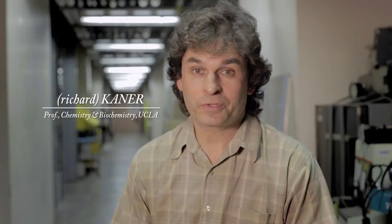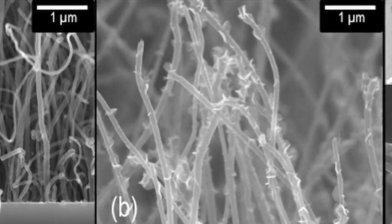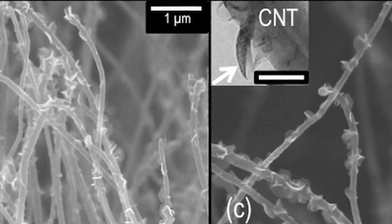Graphene is a single layer carbon. It's one of the strongest materials ever known and it's completely flexible. The discoverers of graphene won the Nobel Prize in 2010.